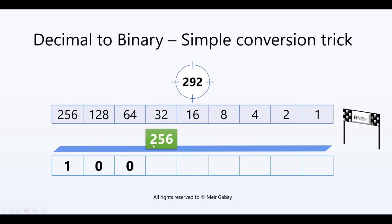Moving on to 32. Does 256 plus 32 fit in 292? Yes it is, it's 288. So we sum them up and we put 1 over here.